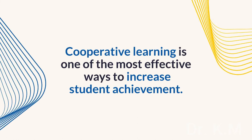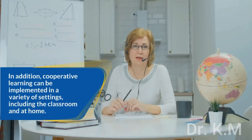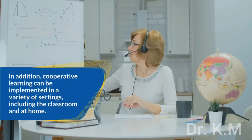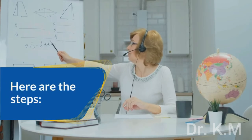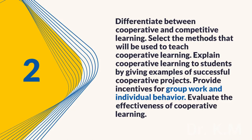Cooperative learning is one of the most effective ways to increase student achievement. Research indicates that students develop higher levels of learning when they work together as a group. Cooperative learning can be implemented in a variety of settings, including the classroom and at home. Here are the steps: Identify the purpose of cooperative learning. Design a plan for cooperative learning by creating a classroom environment conducive to group work. Differentiate between cooperative and competitive learning. Select the methods that will be used to teach cooperative learning. Explain cooperative learning to students by giving examples of successful cooperative projects. Provide incentives for group work and individual behavior. Evaluate the effectiveness of cooperative learning.